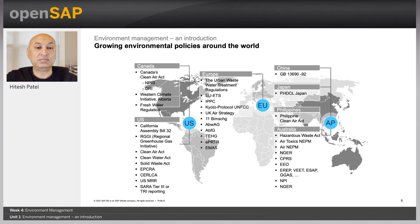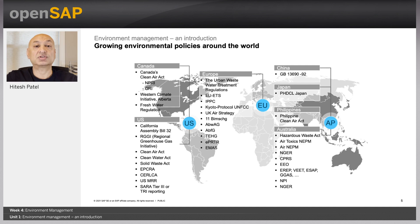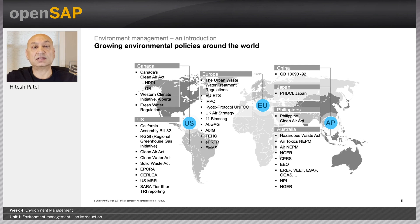Around the globe, pretty much every country has some sort of environmental legislation to protect the environment. By day, these are growing and getting more stringent to ensure that the environment and ecosystem are protected. If you look at the US, there are many legislations such as the Clean Air Act, the Clean Water Act, and the Solid Waste Act — all with the same premise of protecting the environment.